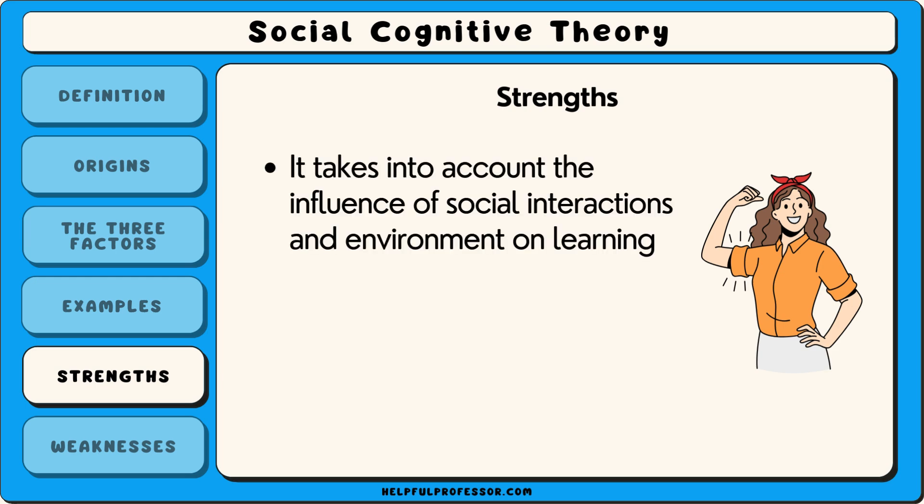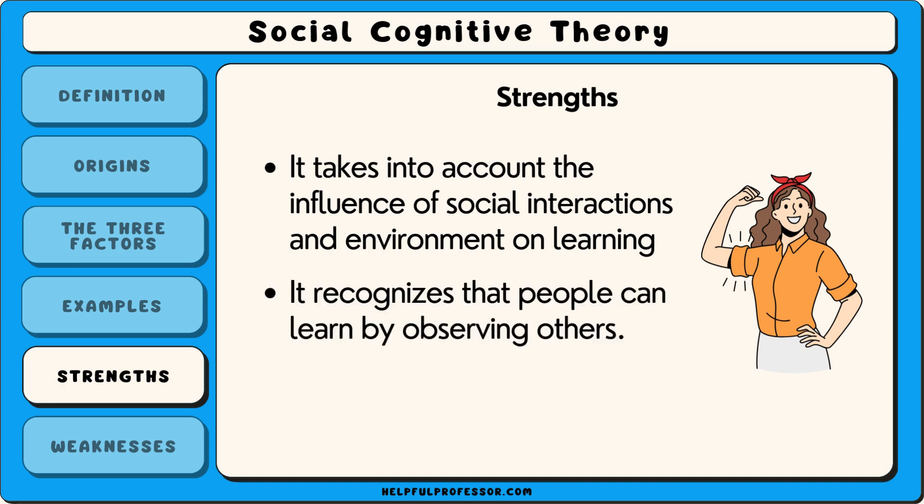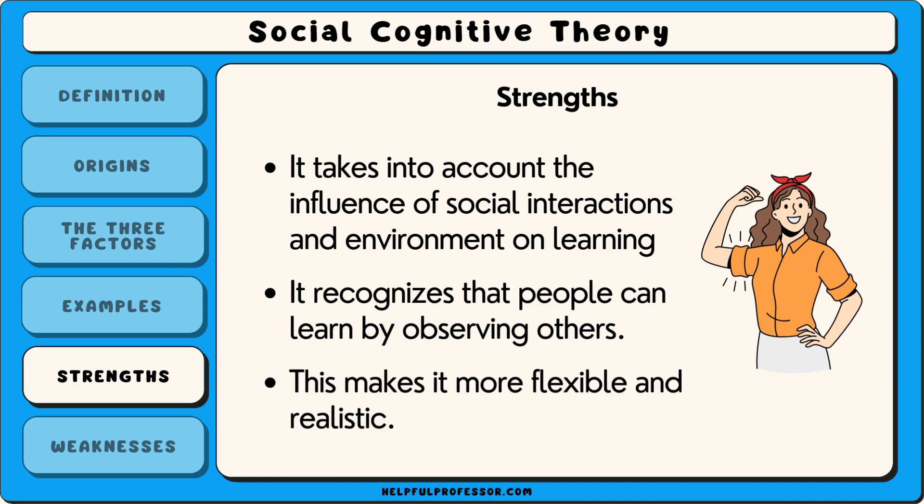A strength of social cognitive theory is that it takes into account the influence of social interactions and environment on learning. Unlike theories that focus only on internal thoughts or direct experience, social cognitive theory recognises that people can learn by observing others. This makes it more flexible and realistic, as it applies to a wide range of situations, including schools, workplaces and homes.